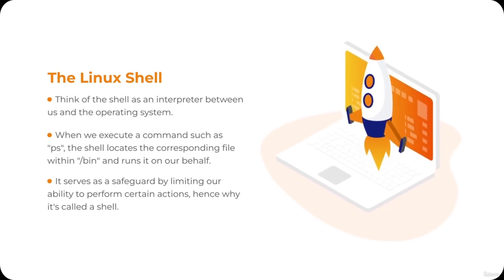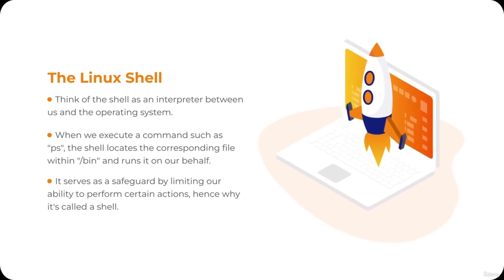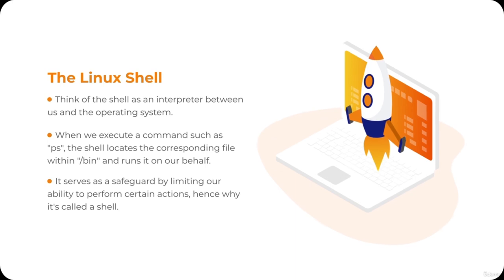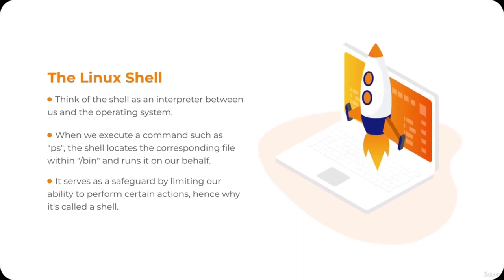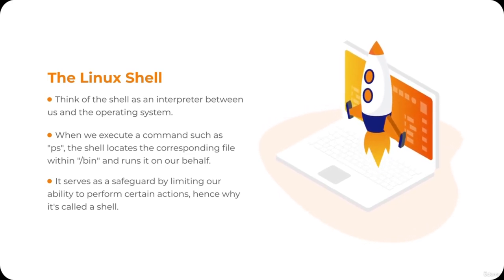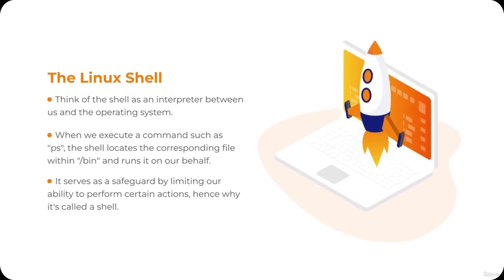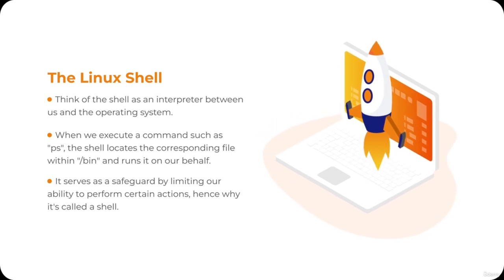However, some Linux distributions come with a graphical user interface instead of a command line interface. For these systems, a different type of shell is employed, known as a graphical shell. Instead of interpreting commands, graphical shells interpret user actions on the graphical interface — such as clicking a button — into tasks for the operating system. For instance, Ubuntu Desktop comes with a graphical interface and consequently a graphical shell, while Ubuntu Server, which we're using now, features a command line interface and employs a command line shell.